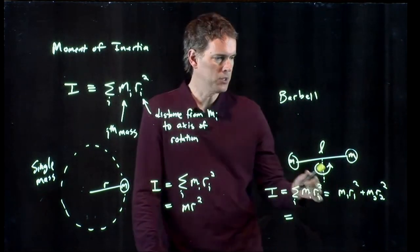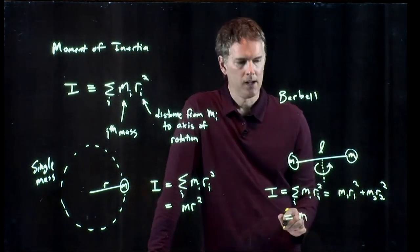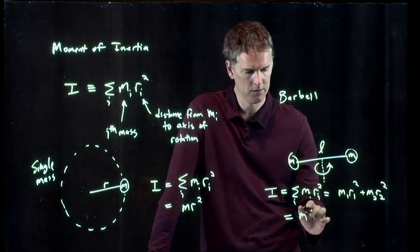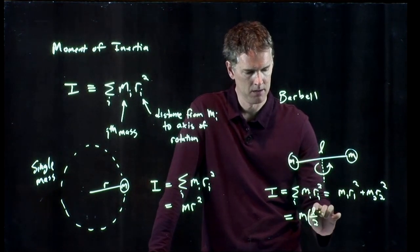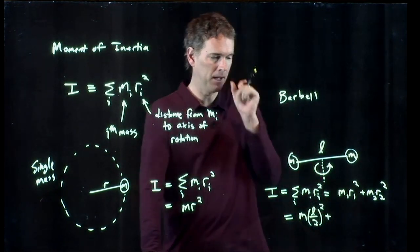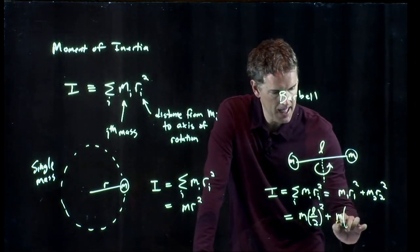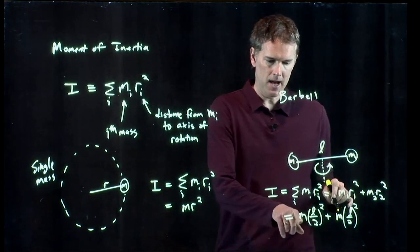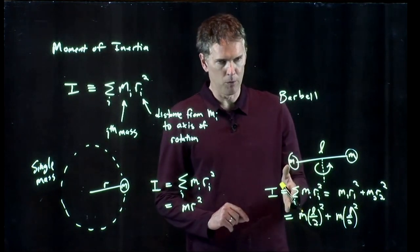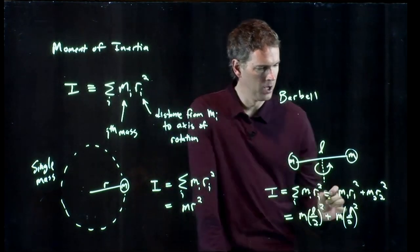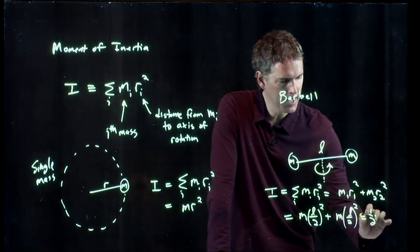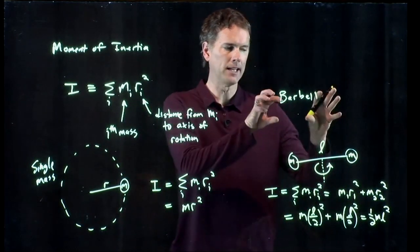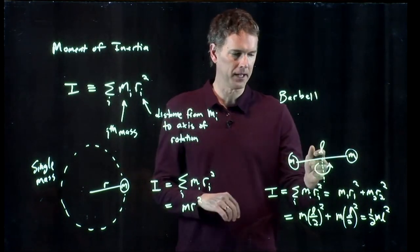But I know what each mass is. It's just m. And in fact, the radius, how far is that mass from the axis of rotation? That's just half the length. So we get m l over 2 squared plus m l over 2 squared. I put them together. What do I have? I have an m. I have an l squared. I have 1 over 4 plus 1 over 4, which is 2 over 4, which is 1 half. And so I get 1 half m l squared. This is the moment of inertia of a two-particle barbell spinning about its center.